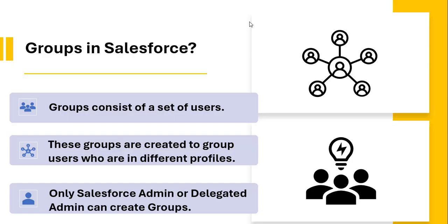Public groups consist of a set of users — we can create a group of more than one user. These groups are created to group users who are in different profiles. For example, if we have two profiles — employee and manager — and the employee profile users created some reports saved in a private folder, only employee profile users can access that report. Using a group, we can add users from different profiles into the same group and share the report folder with that group, so every user in that group can see the report.